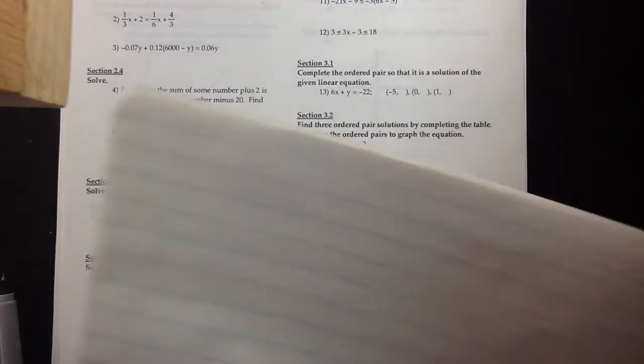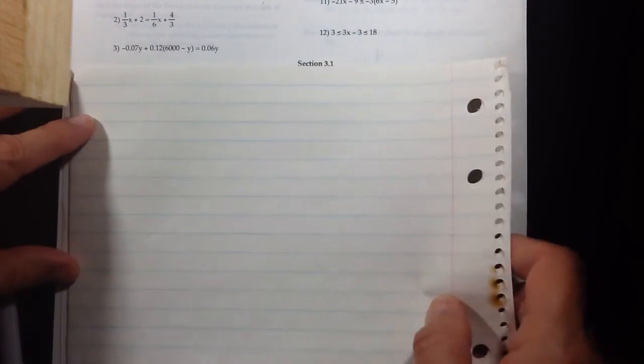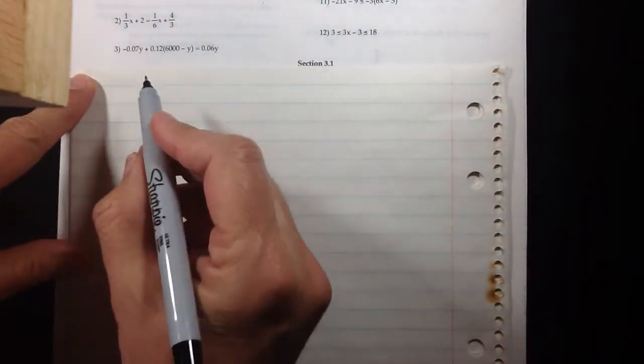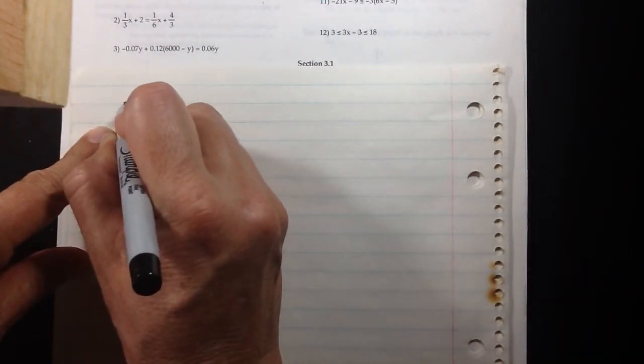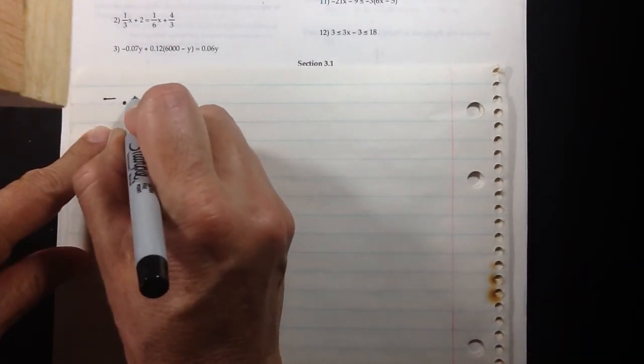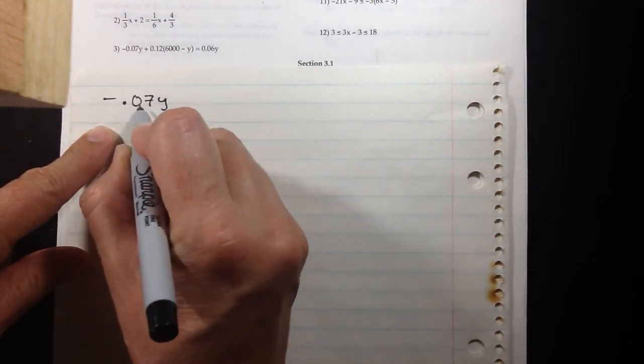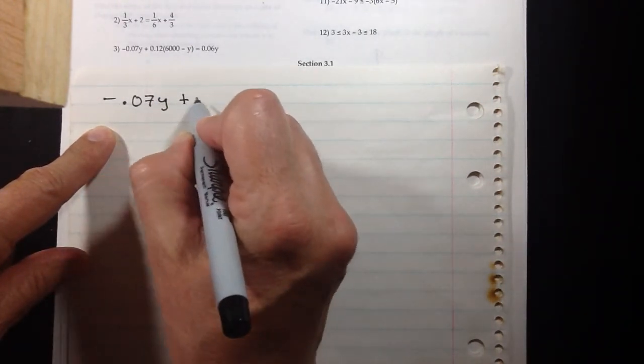On this third problem, it's another solve and it's just a straight linear equation. We can do this a couple of different ways. We can treat this like a fraction, like 7 hundredths.